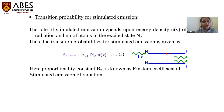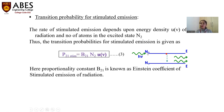For the transition probability of stimulated emission: the rate of stimulated emission involves the upper level, since it is a case of emission. In stimulated emission, there is also an incident photon targeted at the upper level. The probability for stimulated emission from level 2 to level 1 — P21(stimulated) — equals B21 × N2 × U-nu, where N2 is the number of atoms in the higher level.